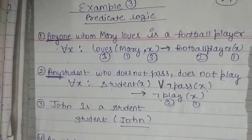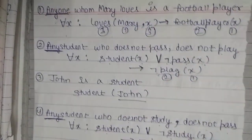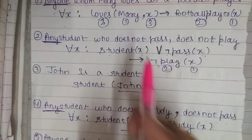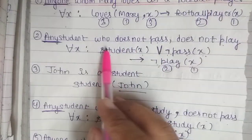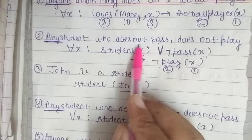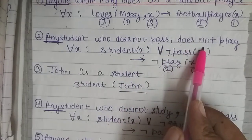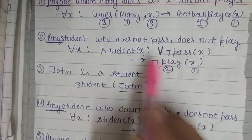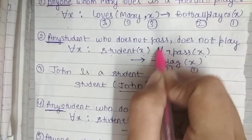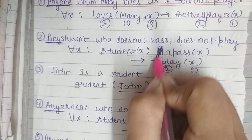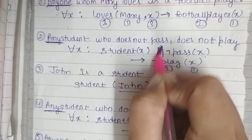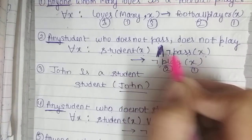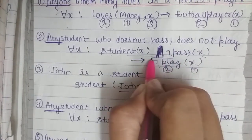In logic example 3, I have made a mistake here. Any student who does not pass does not play — so both conditions must be correct, meaning we will use the 'and' symbol, not the 'or' symbol. This is the mistake I made here.